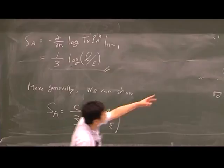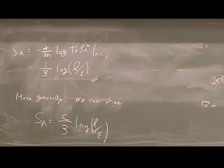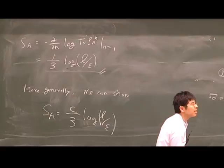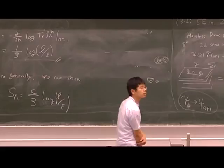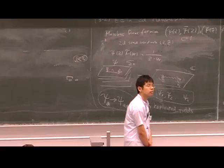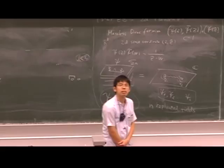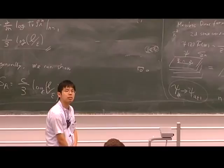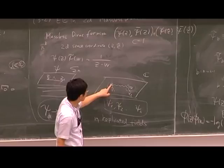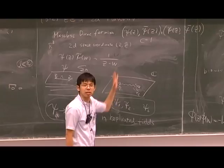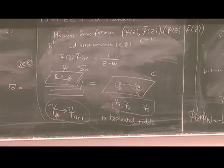Thank you. So I think we can still have one or two questions. A question: why is it difficult to compute the partition function in more dimensions? The reason is that the twist operator, which is point-like in 2D, becomes a surface operator in higher dimensions, and we don't know how to handle that analytically.